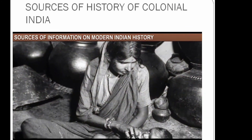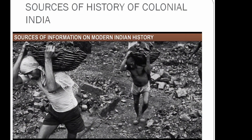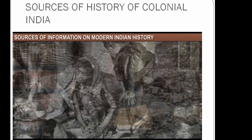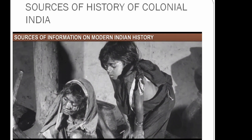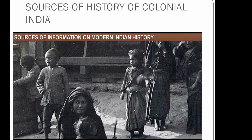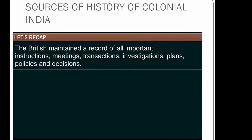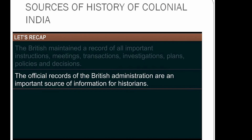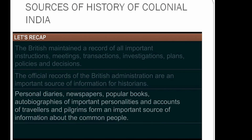These sources give us the opinions of literate people. As we know, history is different for different people, and it is a more difficult task to comprehend how peasants, tribal groups, and the poor illiterate manual workers experienced history. The official records of the British administration are an important source for historians, while personal diaries, newspapers, popular books, autobiographies, and accounts of travelers and pilgrims form an important source of information about common people.